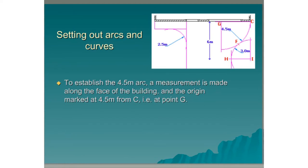To establish the 4.5 metre arc, a measurement is made along the face of the building and the origin marked at 4.5 metres from C at point G.